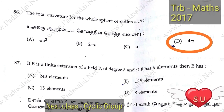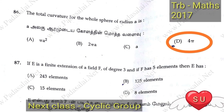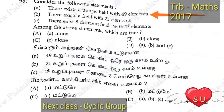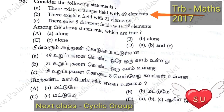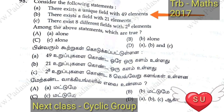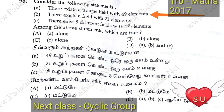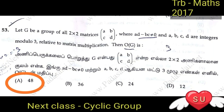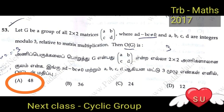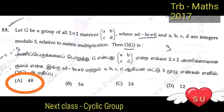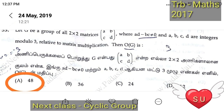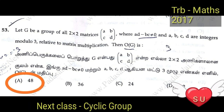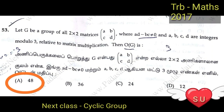If V is a finite extension of a field F of degree 3, and F has 5 elements — we will see problems in the next one. Consider the following statements. Next group question: let G be the group of all 2x2 matrices [a,b;c,d] where ad minus bc is not equal to 0, or where ad minus bc equals 1, with entries as integers mod 3 or real numbers. The order of G will be 48.